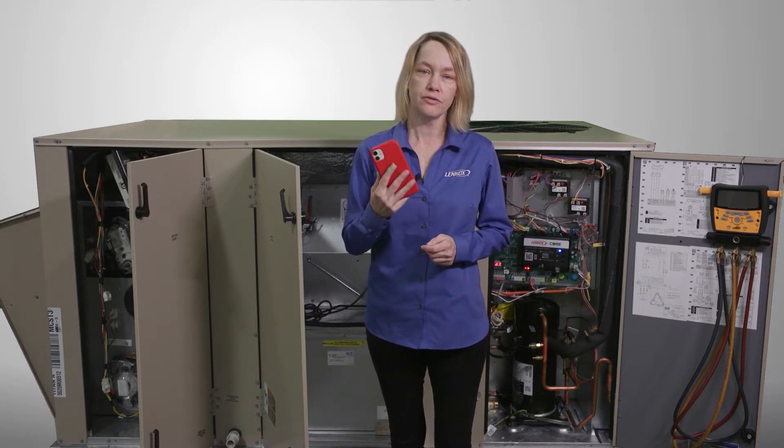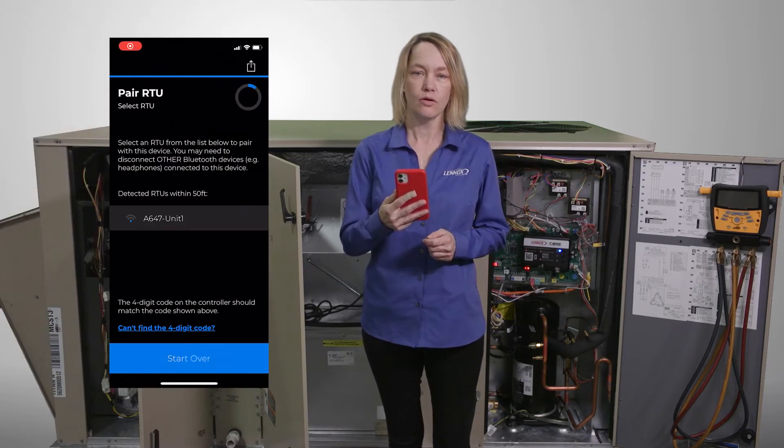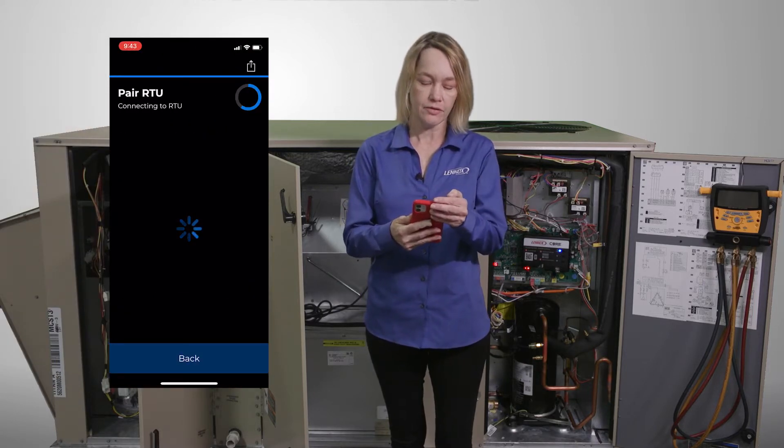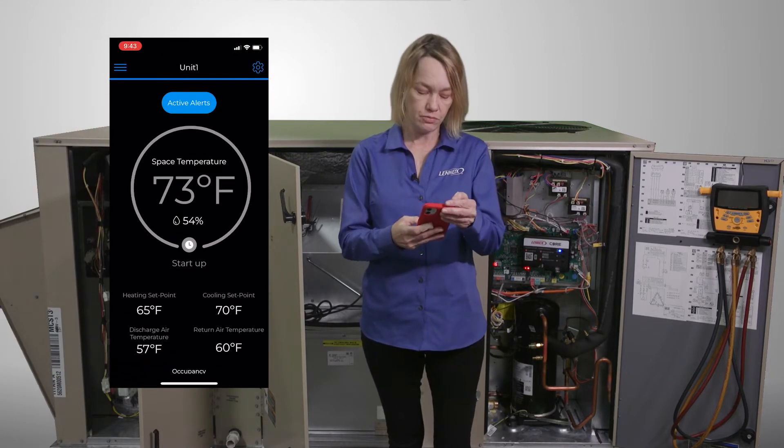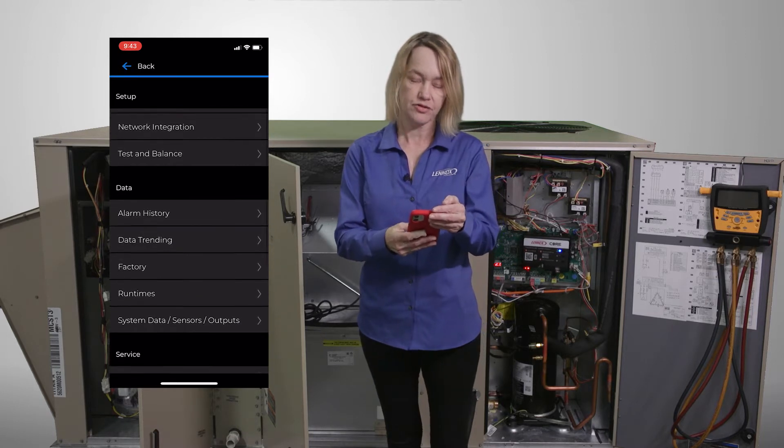First, pair your phone to the unit. Once you're paired, click the rooftop unit menu, scroll down, and select component test.